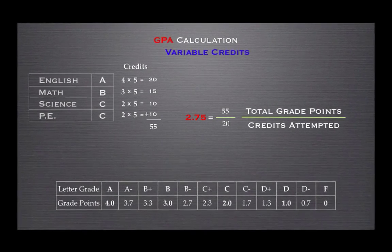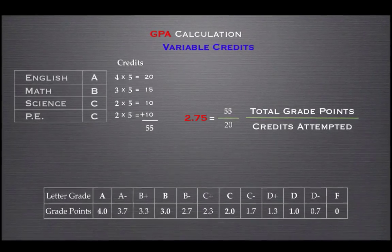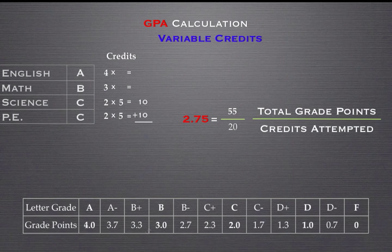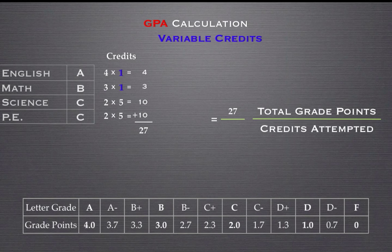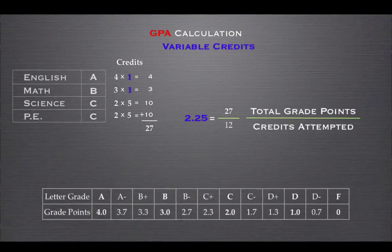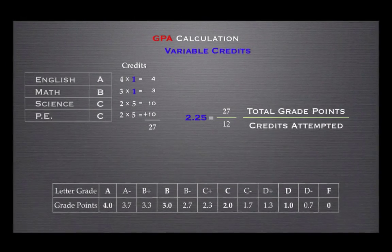Let's look at what happens to our GPA if a couple of these classes were variable credit courses. We'll say that English and Math are only one-credit courses. This would change the total grade points as well as the number of credits attempted. The calculation is the same — we now have a new total grade points of 27 and a new number of credits attempted of 12. Our GPA with variable credit courses is 2.25.